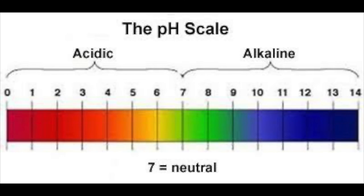With the pH scale, the lower the pH, the more acidic something is. And the higher the pH, the less acidic something is, or the more alkaline it is. Also, with the pH scale, it's a log scale.